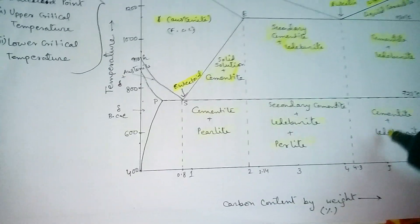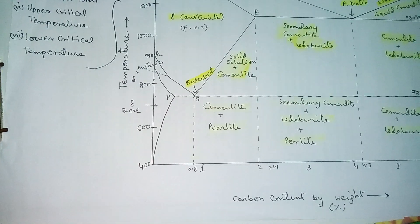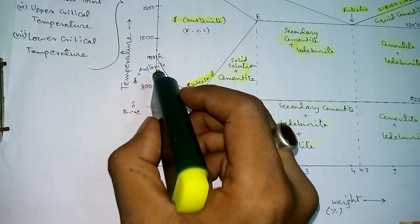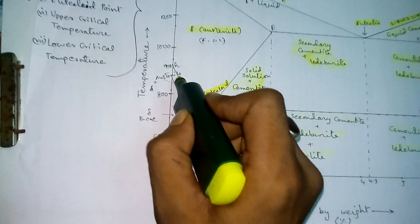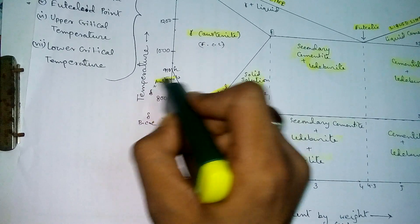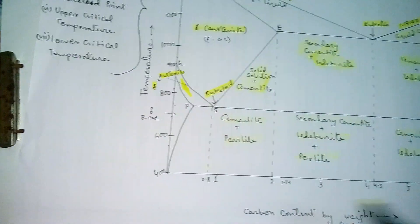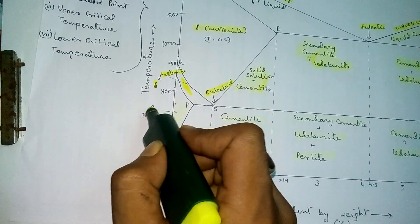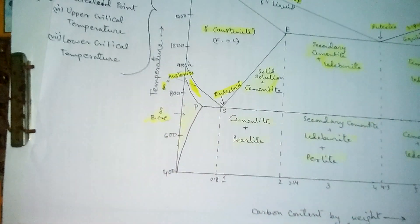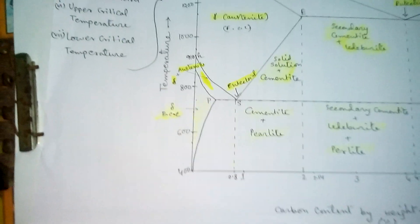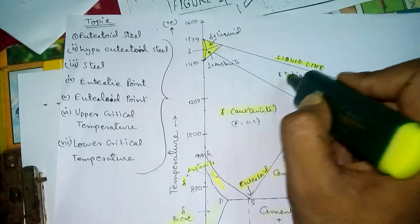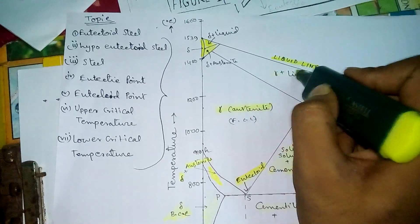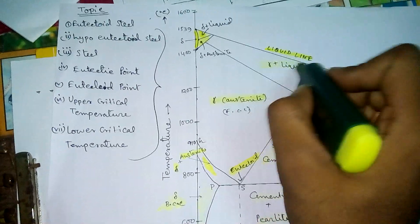This portion is austenite (gamma austenite) and ferrite, and this portion is austenite plus ferrite. This structure is called the body-centered cubic (BCC) structure. And this portion is austenite plus liquid — gamma austenite plus liquid.